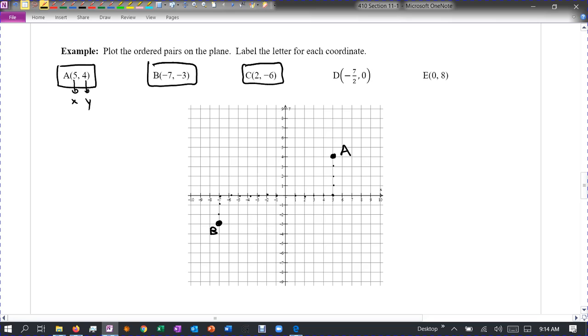Okay, two, negative six. So to the right, two. And then down, one, two, three, four, five, six. We call that C.